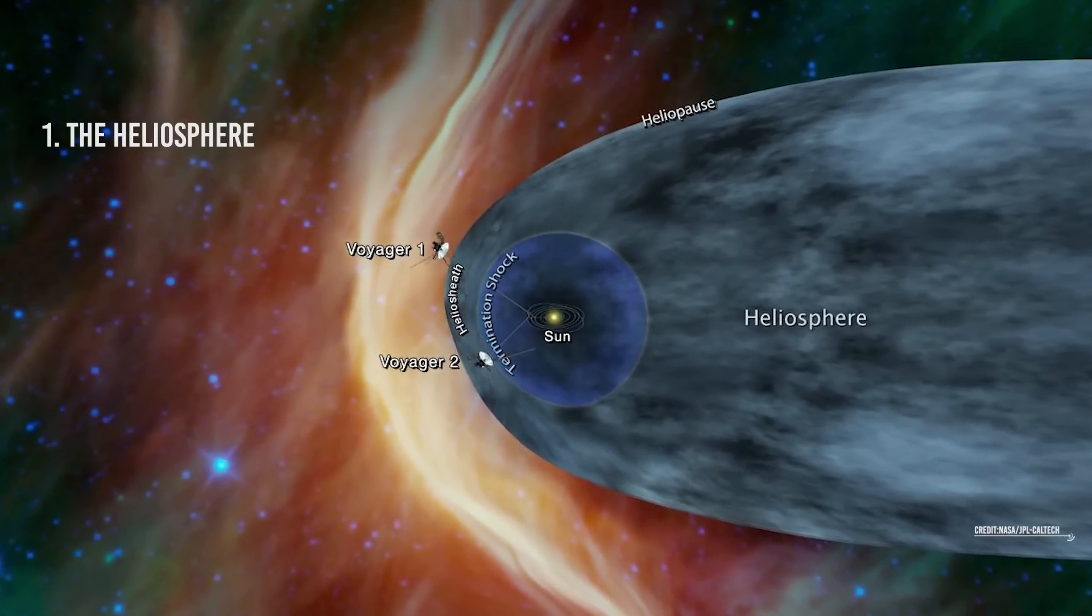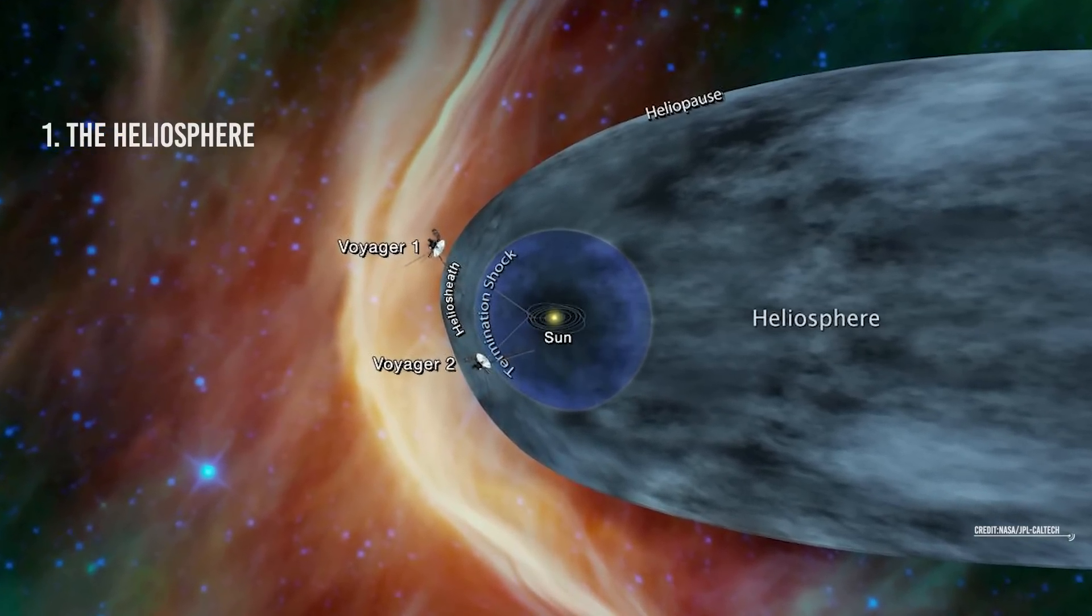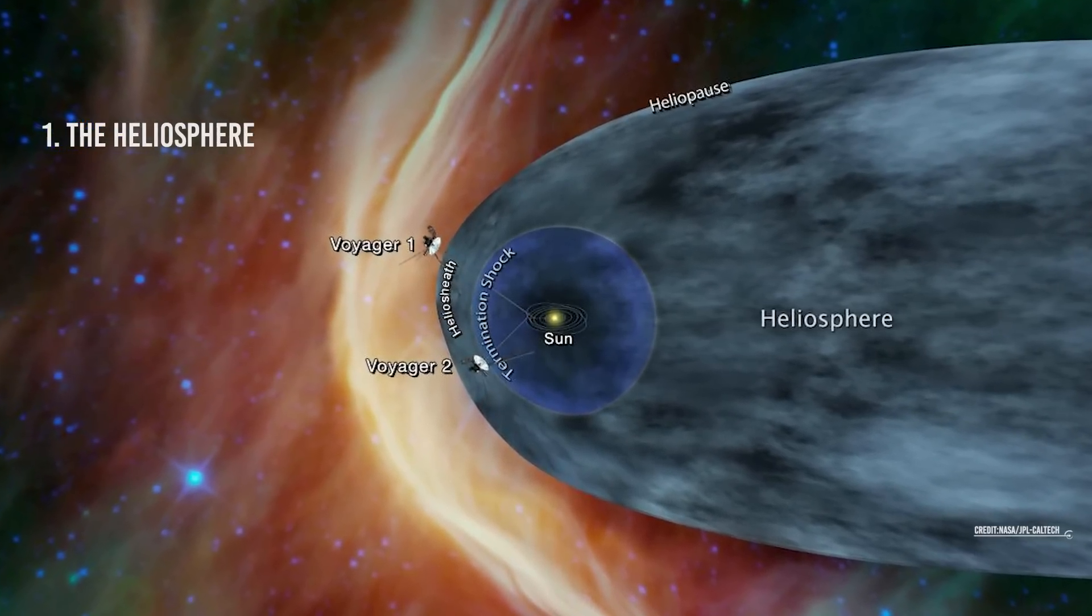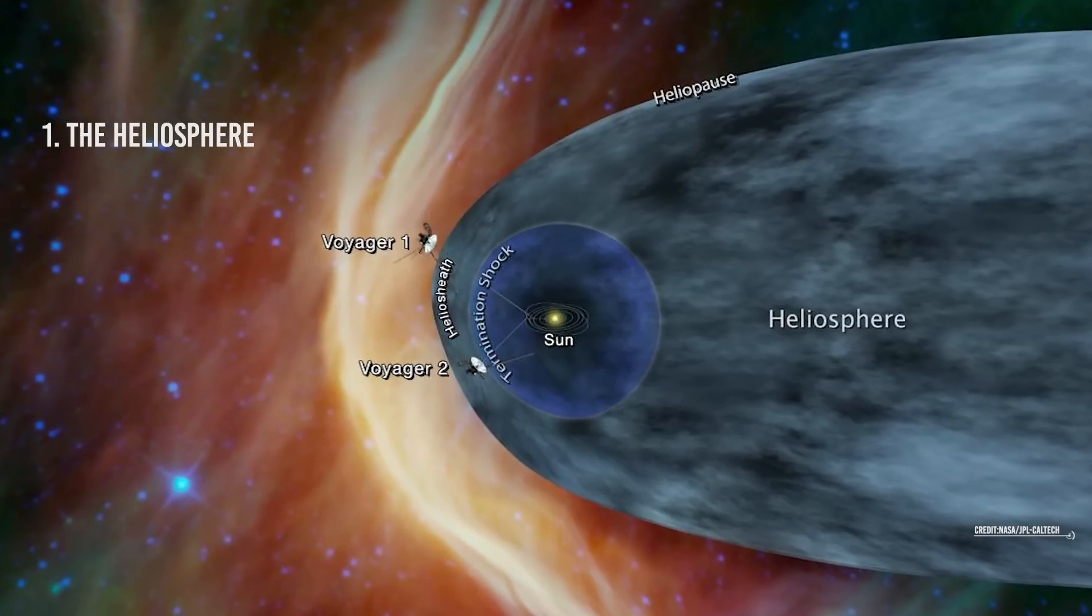Firstly, the heliosphere. This is the one we mentioned earlier, and it is the region where all the planets of the solar system and all the layers surrounding the sun are located.